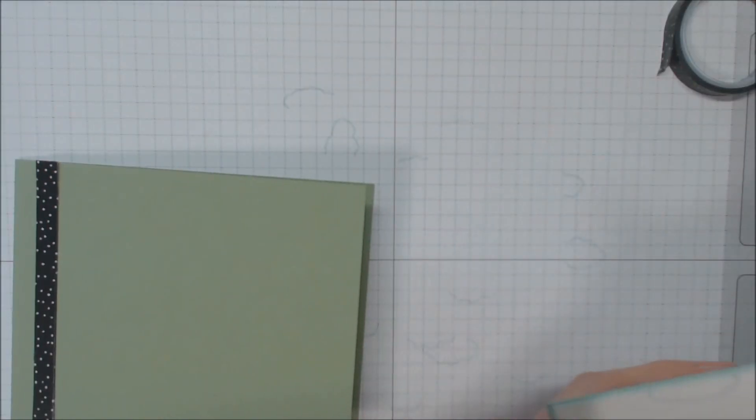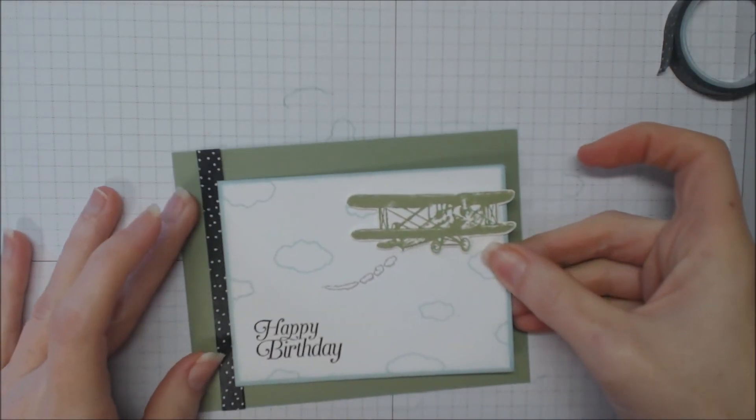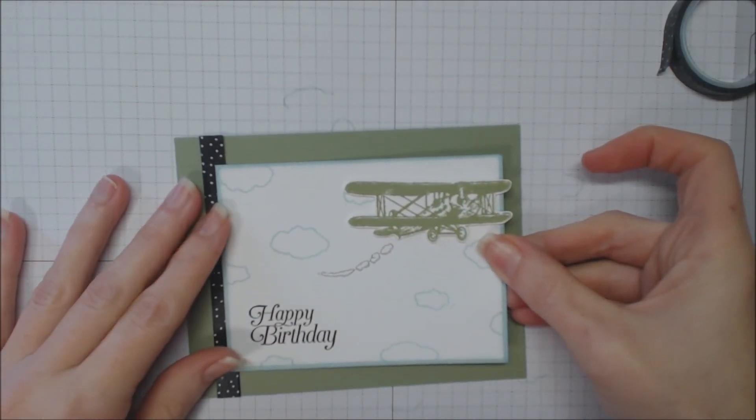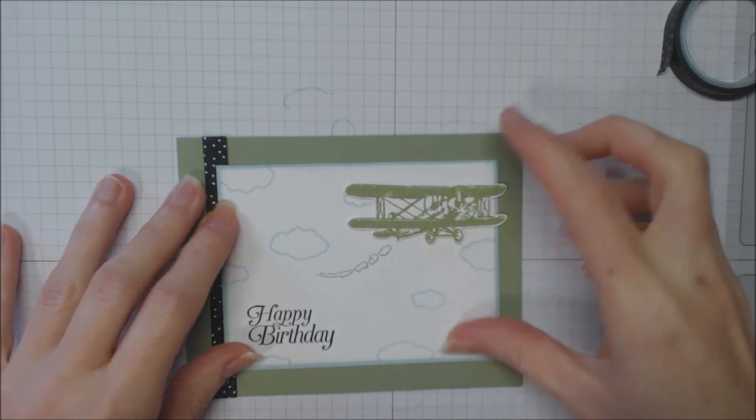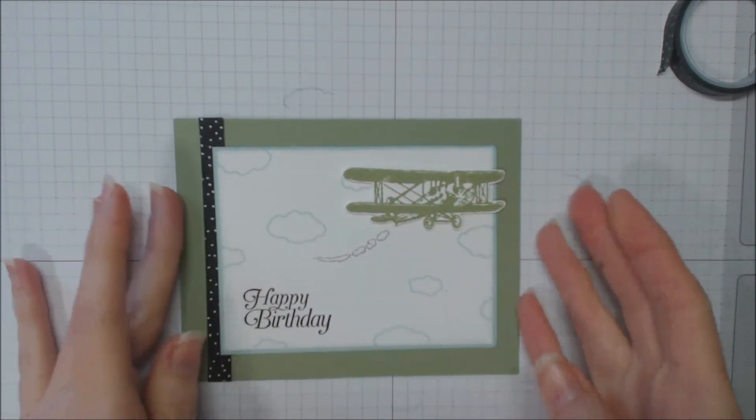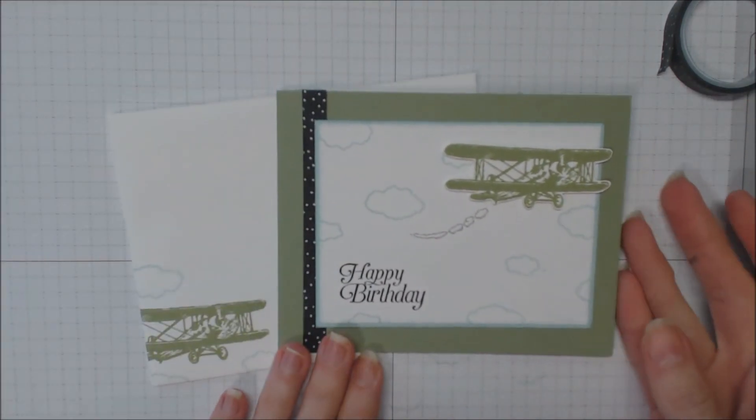Put adhesive on the back of that piece. And have some of it on the tape and kind of center that on our card. There we go. And that's our card with coordinating envelope.